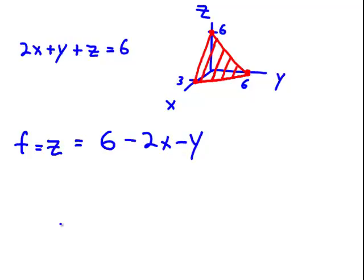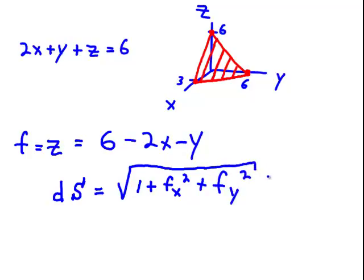Now, I want to use the appropriate ds here. Remember, ds represents an infinitesimally small patch of area on this plane pictured in red here. When I can represent the surface given by f rectangularly, then the appropriate ds to use is the square root of 1 plus the partial of f with respect to x squared plus the partial of f with respect to y squared dA.